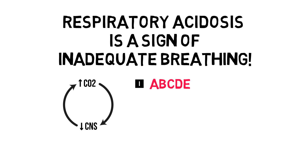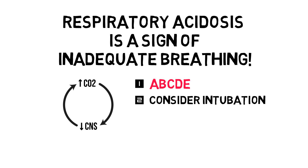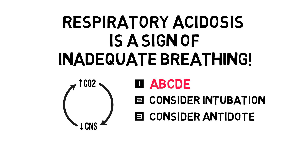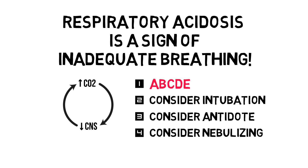Use the ABCDE approach for the primary assessment. Two rules: if they're awake, make them breathe; if they're asleep or if they can't, intubate. If you suspect a drug overdose, consider antagonizing it — naloxone for opioids, flumazenil for benzodiazepines. If it's caused by brain trauma, secure the cervical spine, get an anesthesiologist to intubate, and get a CT scan ASAP. If it's caused by airway obstruction, try to figure out if it's upper or lower, and consider nebulizing for the latter. Neuromuscular causes may require intubation as well.